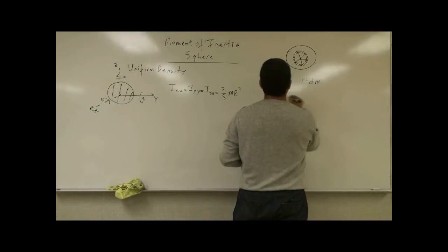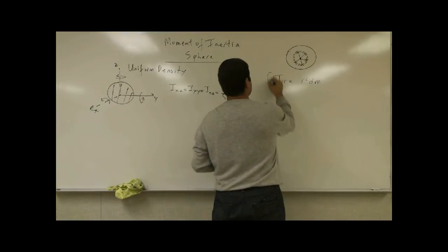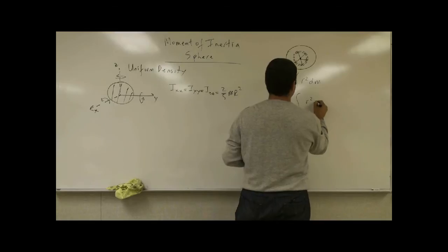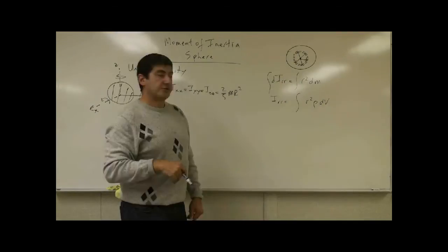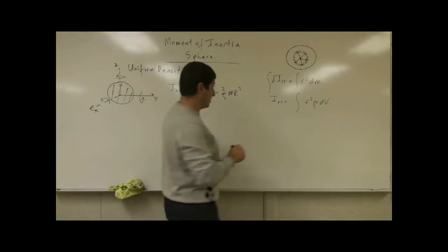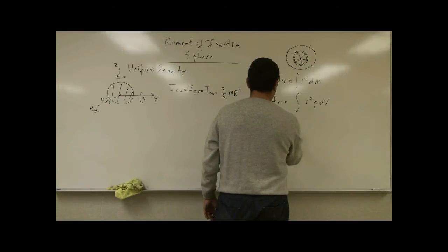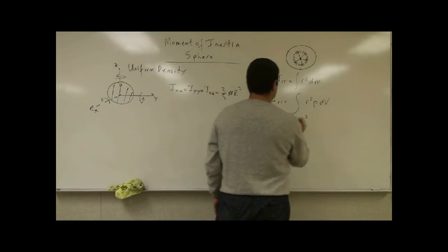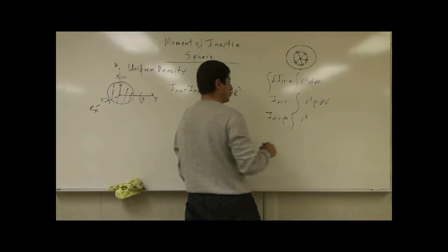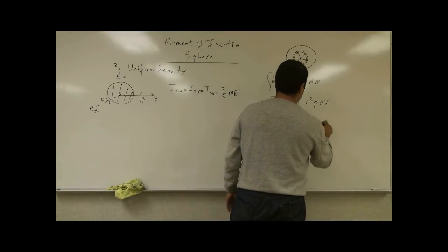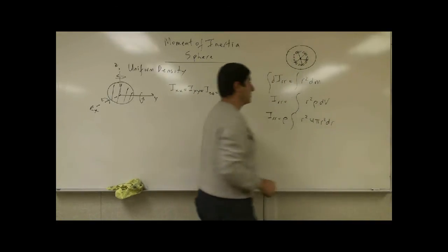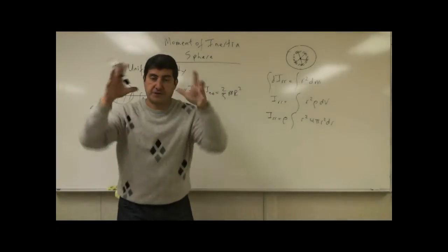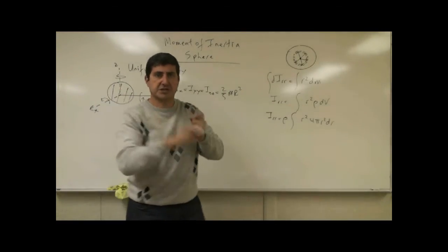We write I_RR = ∫R² dm, then I_RR = ∫R² ρ dV, where ρ is the volume mass density. For a uniform sphere, ρ comes out of the integral. The volume element dV for a spherical shell is 4π r² dr — that's the surface area of the sphere times the thickness of the shell.